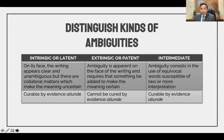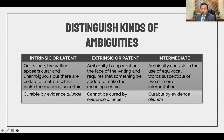What about intermediate ambiguity? In intermediate ambiguity, the ambiguity consists in the use of equivocal words susceptible of two or more interpretations — the words used are not clear or specific. If the ambiguity consists of the use of an equivocal word, it is called intermediate ambiguity, and this can be cured by evidence aliunde, or evidence outside the written agreement. So there are two kinds of ambiguity for which you can present extrinsic evidence: intrinsic or latent ambiguity, and intermediate ambiguity.